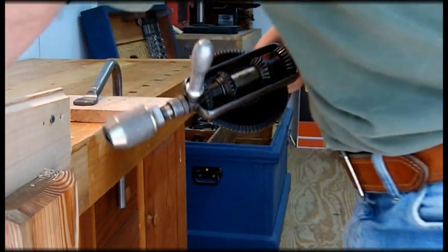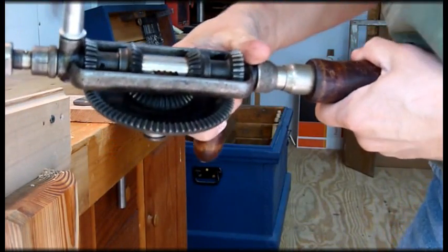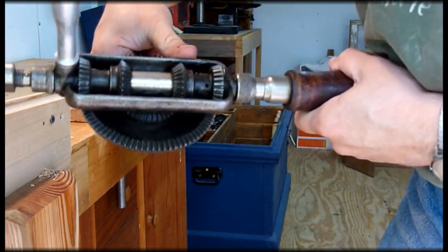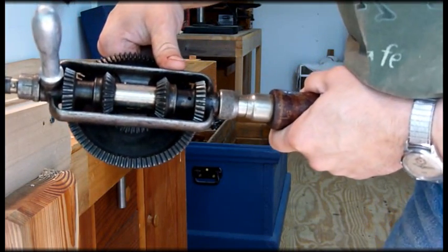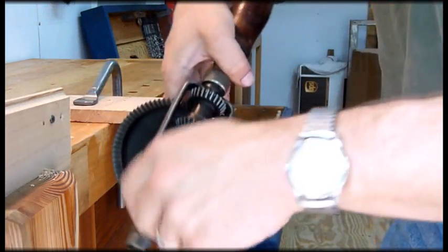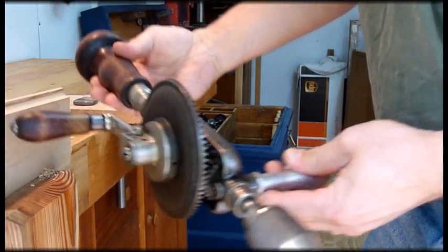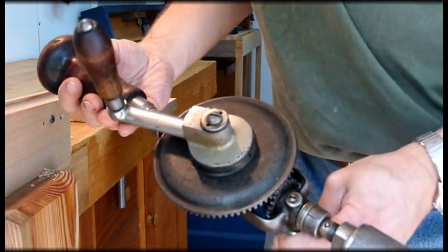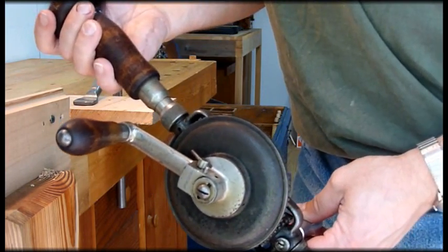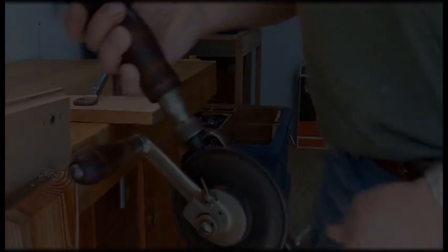So, this, again, is the Yankee Double Ratcheting 1545, made by North Brothers Manufacturing. Patent dates go as late as 1910. And a really cool, beautiful old tool here. So, if you find one of these or lots of fun, good, useful tool to have around. Pick it up. You won't be sorry. Thanks. See you next time.